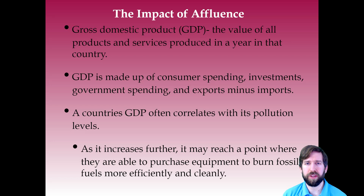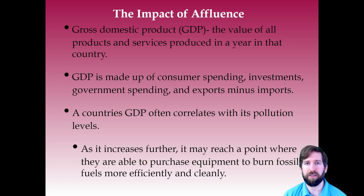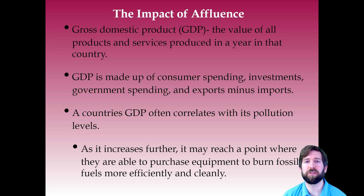As a country goes through the demographic transition model, there is a big change in GDP — the value of all products and services produced in a year — which changes the affluence and the amount of money people have. As GDP increases, there is an increase in consumer spending, investments, government spending, and exports minus imports, which correlates with pollution. Countries are making products, manufacturing is occurring, and resources are needed. Often in the transitional phase, they are not too worried about environmental impact as they try to catch up to more developed areas — polluting quite a bit. Eventually they may reach a point where they can purchase equipment to burn fossil fuels more efficiently and cleanly, but that comes only after transitioning to the most modern technology.